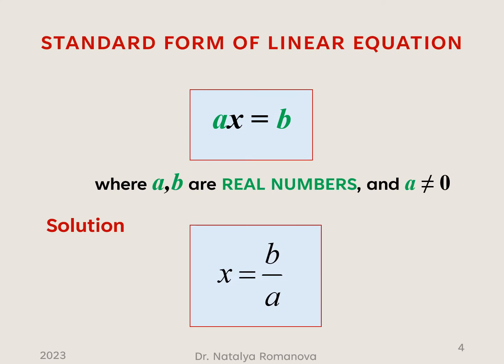Standard form of a linear equation — very important to solve linear equations. The standard form is Ax equals b, where a and b are real numbers and a cannot equal 0. The solution of a linear equation in standard form is x equals b over a.